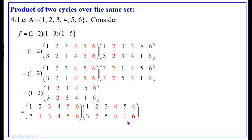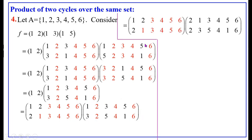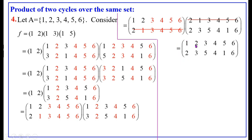Now we multiply these two permutations. We rearrange the columns of the second permutation so the second line of the first permutation — 2, 1, 3, 4, 5, 6 — matches the first line of the second. Verifying images: 2→2, 1→3, 3→5, 4→4, 5→1, 6→6. We cancel the second line of the first permutation and first line of the second. Therefore, this equals the permutation with top row 1, 2, 3, 4, 5, 6 and bottom row 2, 3, 5, 4, 1, 6.